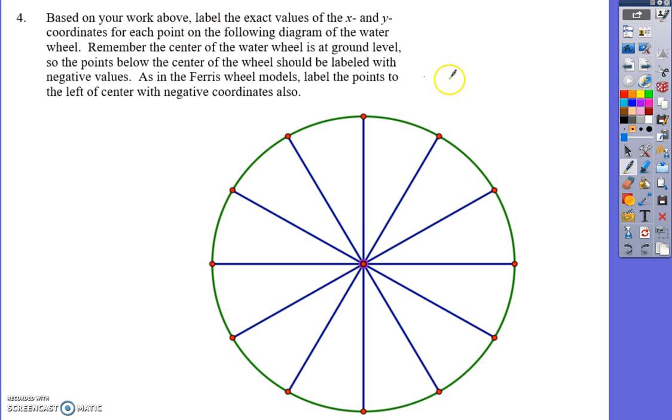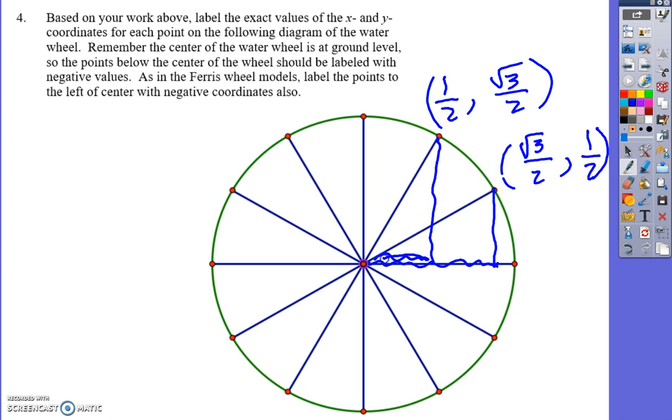Try to find all of the x,y coordinates for the whole circle. We've got these two already - it was radical three over two comma one over two, and this one was one half comma radical three over two. The way I remember that is x is bigger on the smaller angle, so the bigger number goes first.